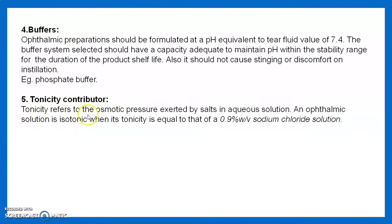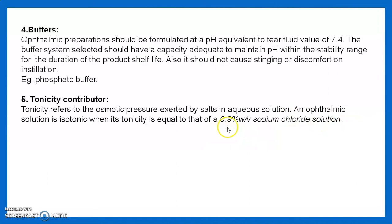Tonicity refers to the osmotic pressure exerted by salts in an aqueous solution. An ophthalmic solution is isotonic when its tonicity equals that of 0.9% w/v sodium chloride. Normal saline at 0.9% is said to be isotonic with our blood plasma.